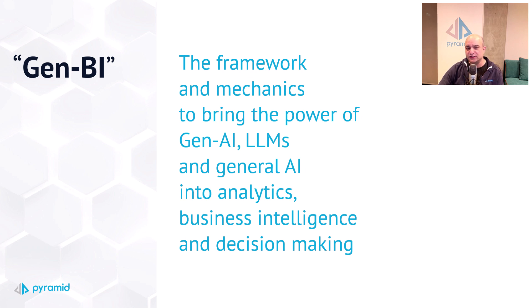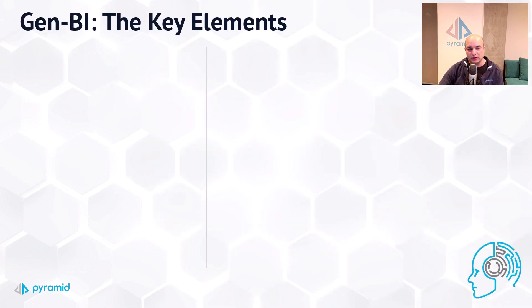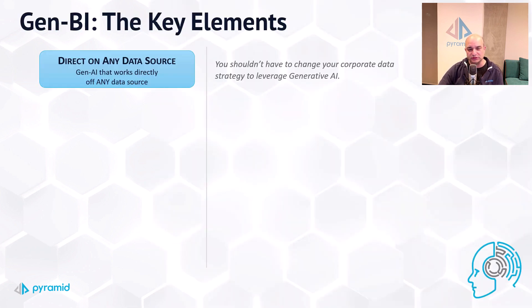With that in mind, let's focus on the five key elements or principles of Pyramid's generative BI approach. The first, and easily the most important at this time, is that Gen BI should be able to work directly on any data source. You shouldn't have to change where your data is housed or collected, the underlying technology behind it, or even how your data is structured — you should be able to simply point and shoot, or really point and question.